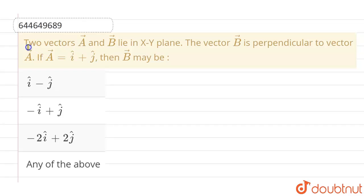Hello everyone. If we talk about this question, the given question is two vectors, A vector and B vector, these lie in xy plane only. The vector B is perpendicular to vector A, and if A vector is given as i cap plus j cap, then B vector is...